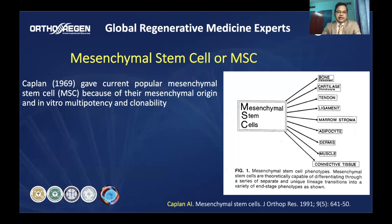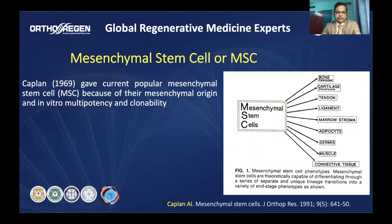In 1969, Caplan gave the current popular terminology for the mesenchymal stem cell because he believed their origin is from mesenchymal tissue and they also have the ability to show in vitro multi-potency and clonability. He believed these cells could convert into different cell types like bone, cartilage, tendons, and ligaments. Over the next few decades, mesenchymal stem cell became the most commonly used terminology in published literature.